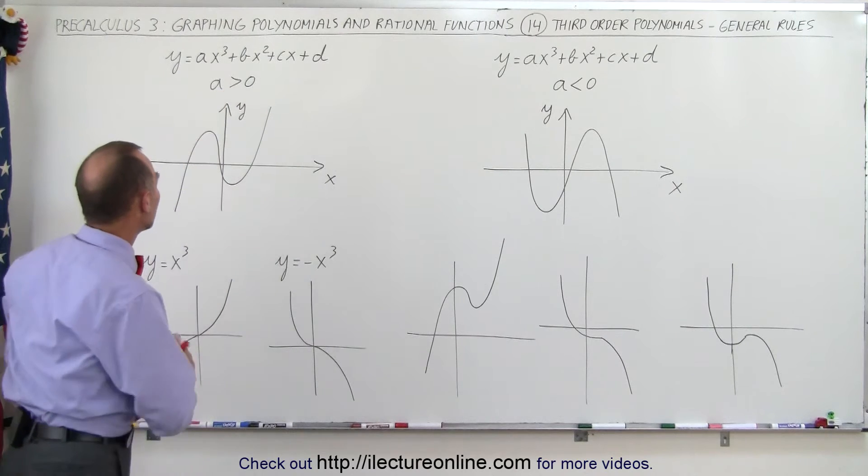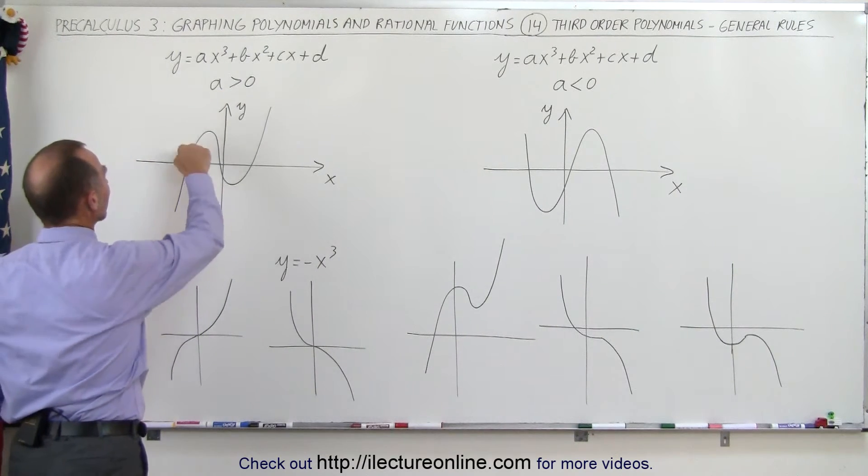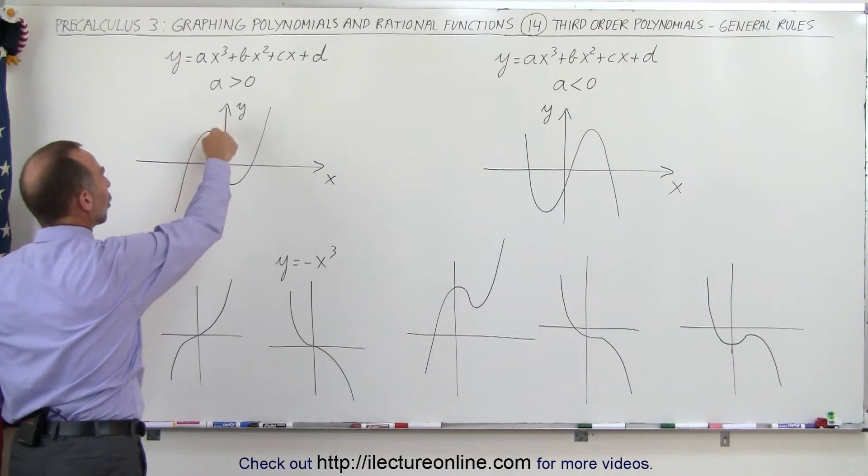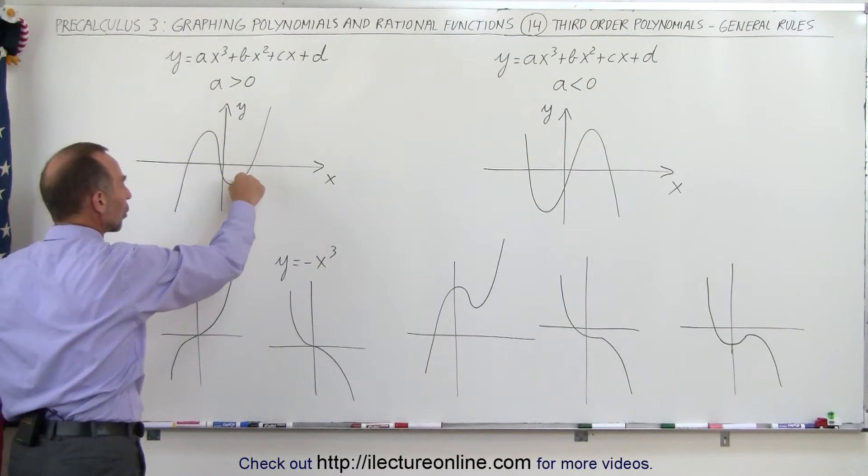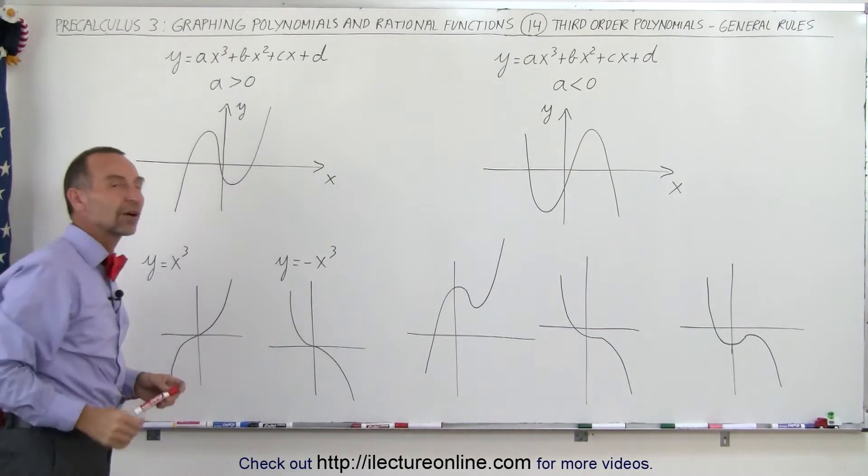is positive, you notice that it starts from the negative values for y, comes up here, reaches a what we call local maximum, comes down here, or local minimum, and then it continues to increase forever in the positive y direction like that.